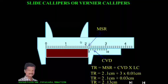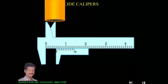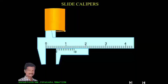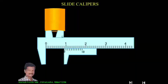Now let us see what the upper jaws are used for. This is a hollow cylinder. In order to measure the internal diameter of this hollow cylinder, we use the upper jaws. Insert the two upper jaws inside the cylinder and move the vernier scale until the jaws touch the inner walls. The gap between the jaws equals the internal diameter of the cylinder.